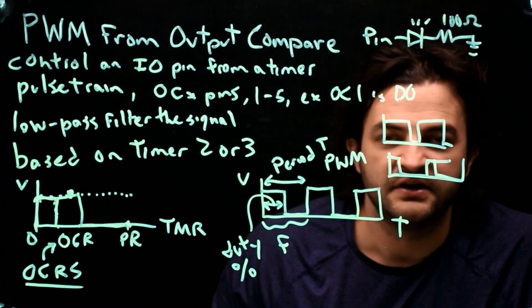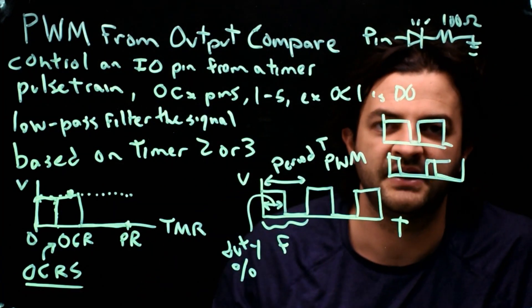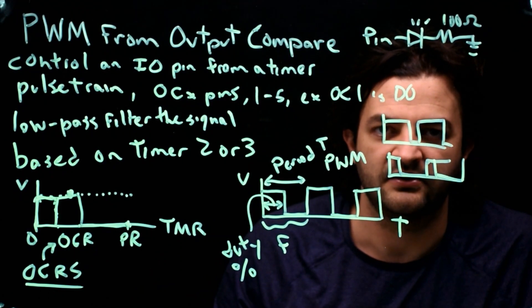So that's enough for this video. Let's do another video next where we use PWM and a low-pass filter to make an analog voltage.